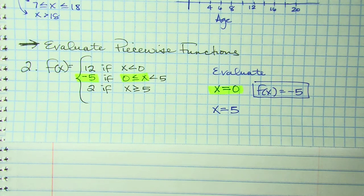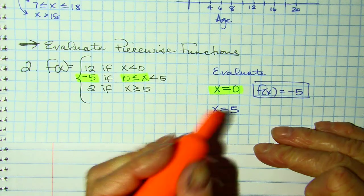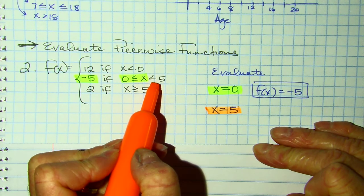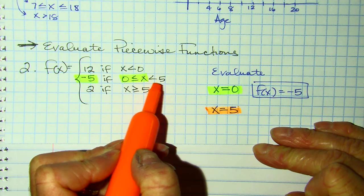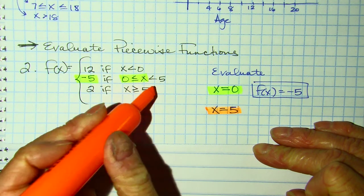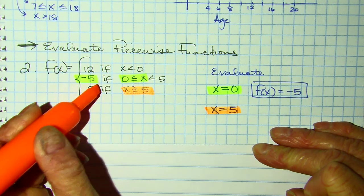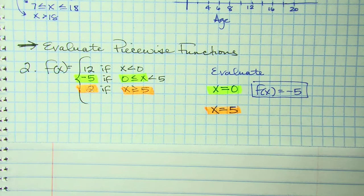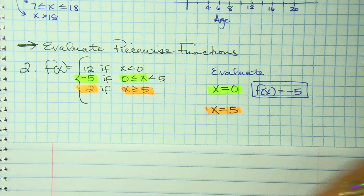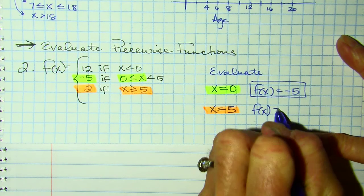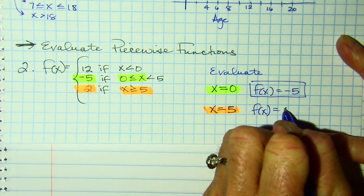Now looking for where X equals 5. It's not the middle one because that says less than 5. But X greater than or equal to 5 applies here. So F of X — or Y, that's what they're really asking for, the Y value — equals 2.